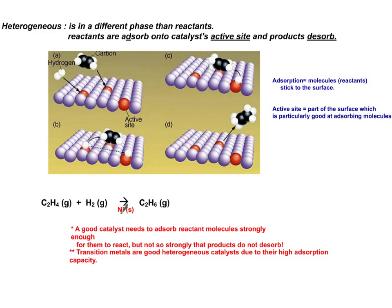Heterogeneous catalysts are those that are in a different phase than the reactants. So if your reactants are in the gaseous phase and your catalyst is solid, that's an example of heterogeneous. For this example, I chose ethylene, which is unsaturated with a double bond, and it becomes ethane via an addition reaction of hydrogen — hydrogenation — over the surface of nickel. This is a picture to make it easier: these are atoms of nickel next to each other, and it's a surface phenomenon.